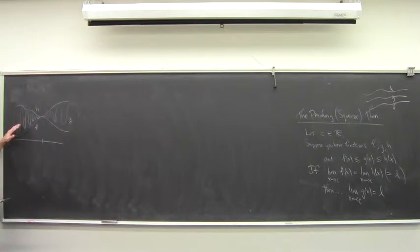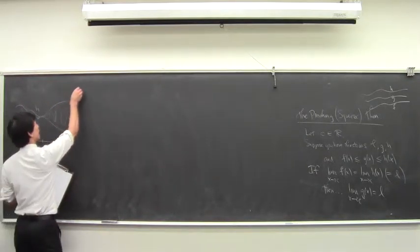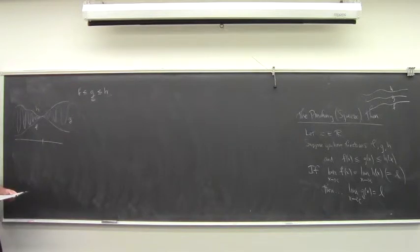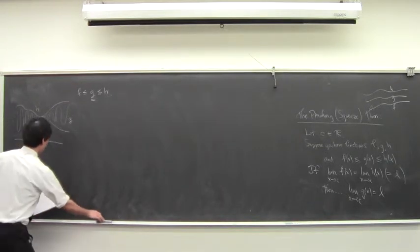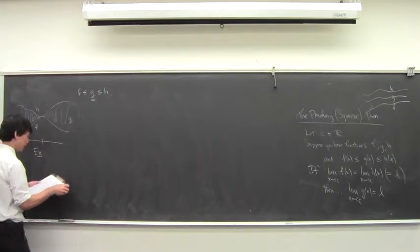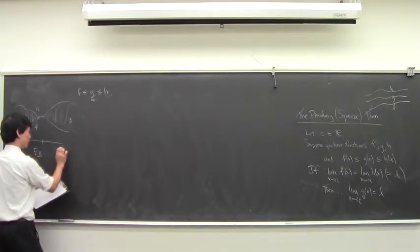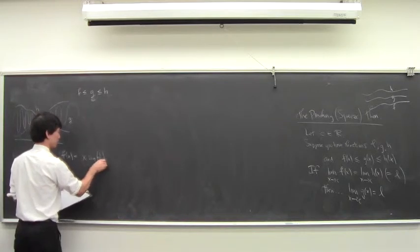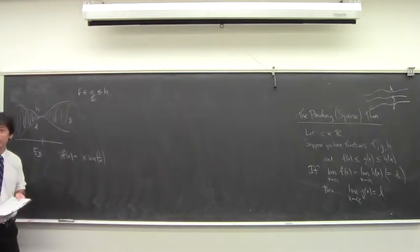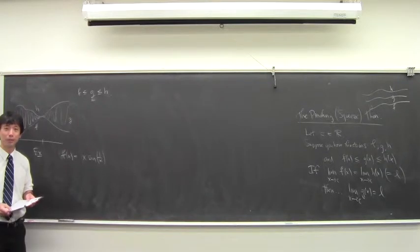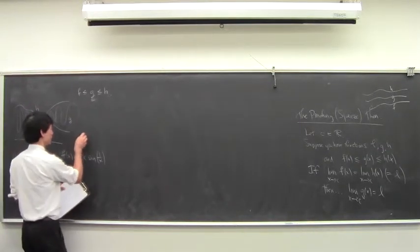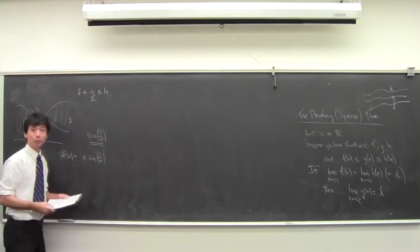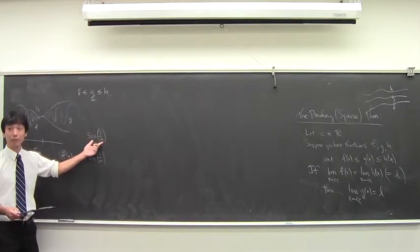So that's the squeeze: it's trapped between them. The standard example is f(x) = x times sine(1/x). Does anyone know what this function looks like? Take a few minutes and try to think about what sine(1/x) looks like, and also x times sine(1/x).